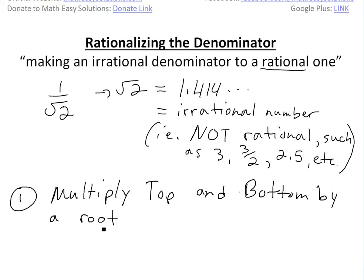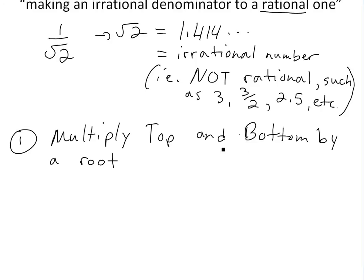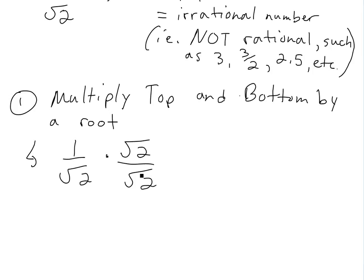Number 1 is basically multiply the top and bottom by a root here. So what I mean by this, for this case here, this 1 over square root 2, if you just multiply both top and bottom by square root of 2 right here. So now, because we know that square root 2 divided by square root 2 is just going to be 1, any number divided by itself is 1 except 0 because it's not defined. So we're not changing anything.